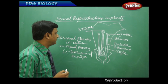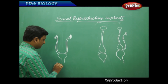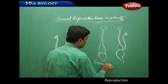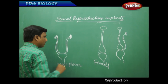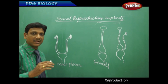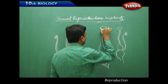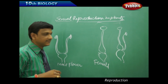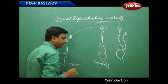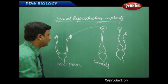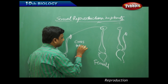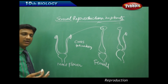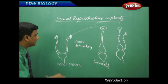Here we have different flowers — a male flower with only male reproductive parts, and a female flower with only female reproductive parts. For fertilization, the male and female gametes must fuse. When the pollen grains of one flower fertilize the ovule of another flower of the same or a different plant, we call it cross-pollination — that is, cross-pollination between two different flowers of the same plant or different plants of the same genus or family.